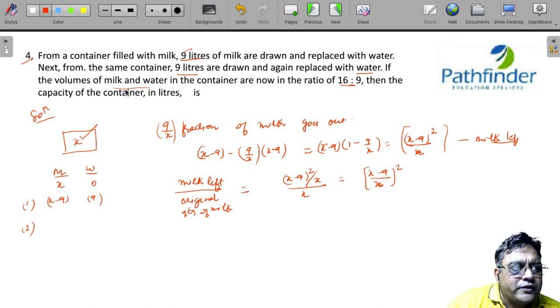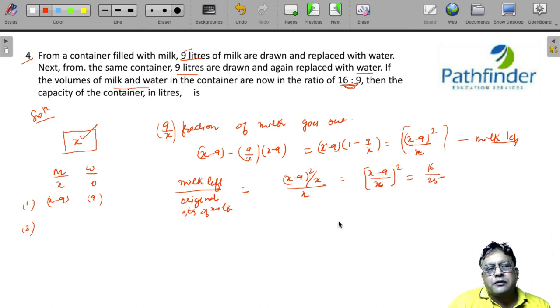And what is the ratio of milk and water? 16 is to 9. Because initially there was milk only, therefore the ratio of milk and initial quantity of milk can also be equal to the ratio of milk remaining upon the total quantity of mixture, that is 25. So if you simplify this, you can take the square root on the two sides.